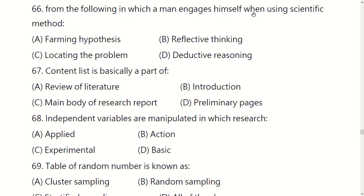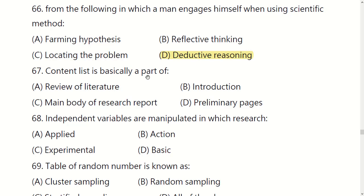From the following, in which does a man engage himself when using the scientific method? You have four options. The right option is D: deductive reasoning.